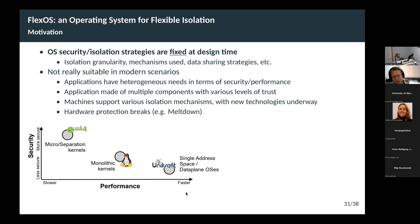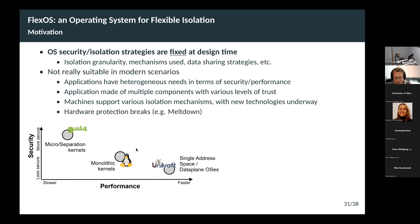This is not suitable in many scenarios. Applications have very heterogeneous needs in terms of security and performance, and no one operating system is good for all use cases. Applications are made of multiple components with various levels of trust that could require being isolated from each other. You have machines with various isolation mechanisms and many new technologies underway — things like CHERI capabilities, SGX and confidential VMs. And then you have hardware protections that break: you get Meltdown on Linux, where the user-kernel separation is not secure anymore, with no easy fallback solution.